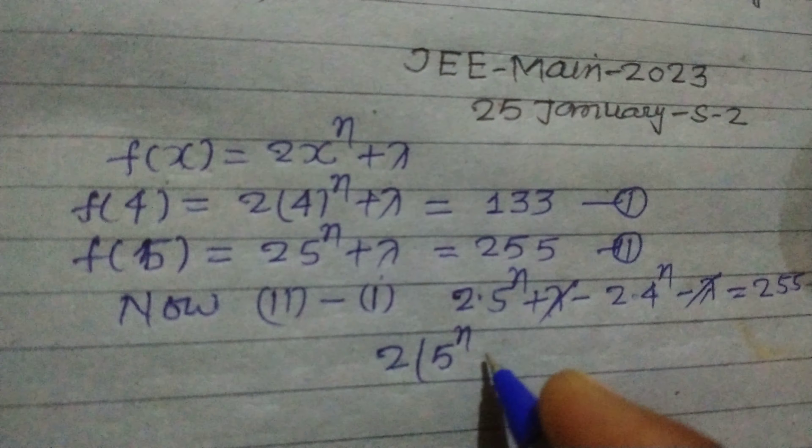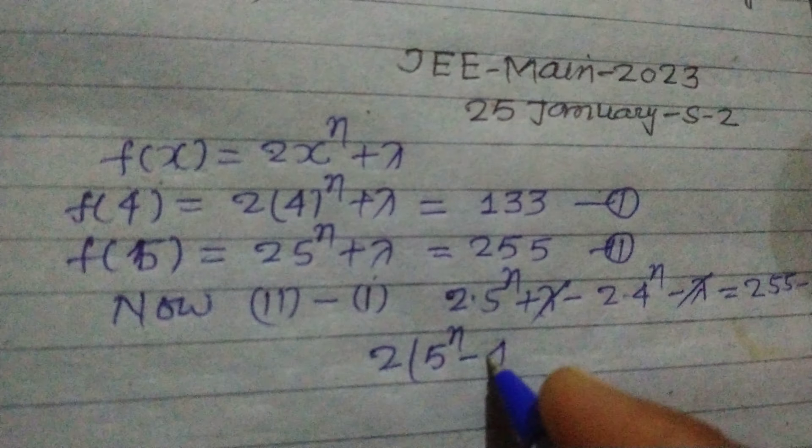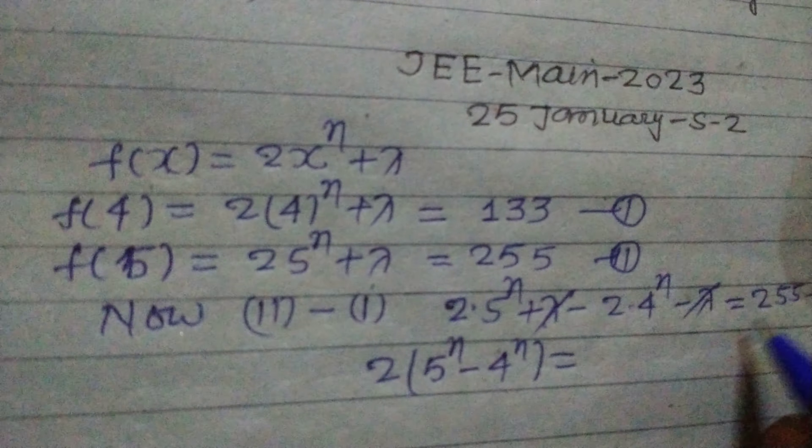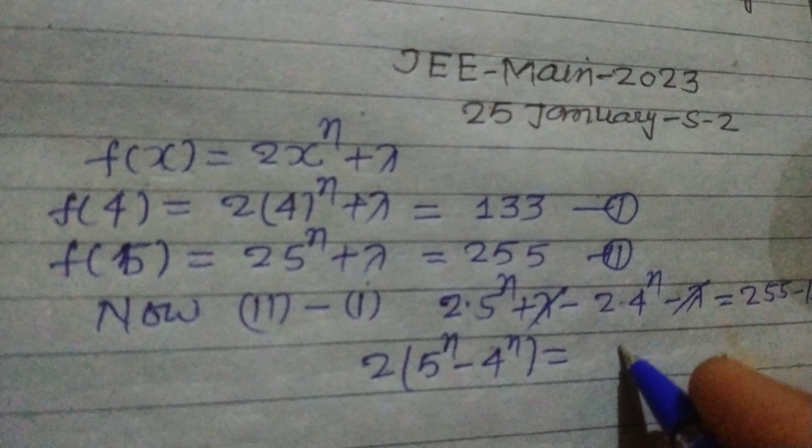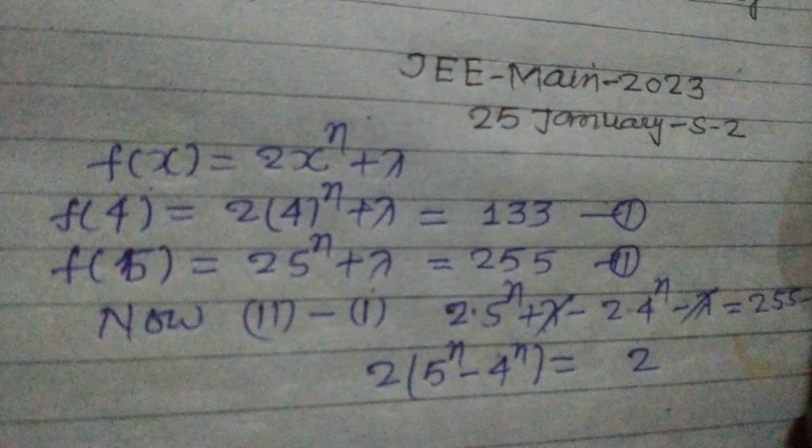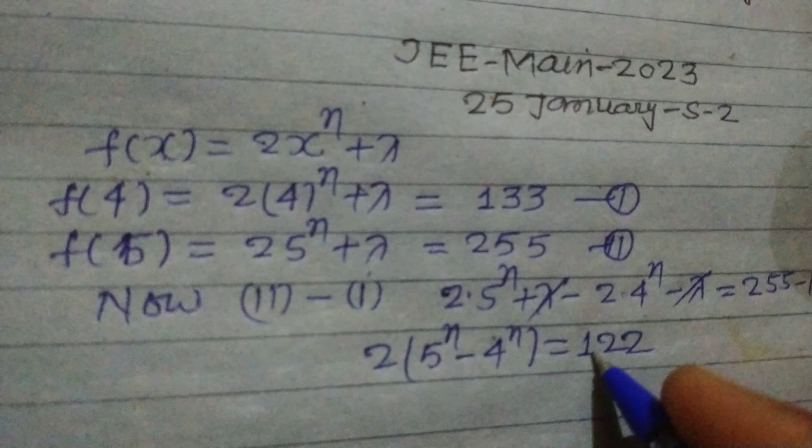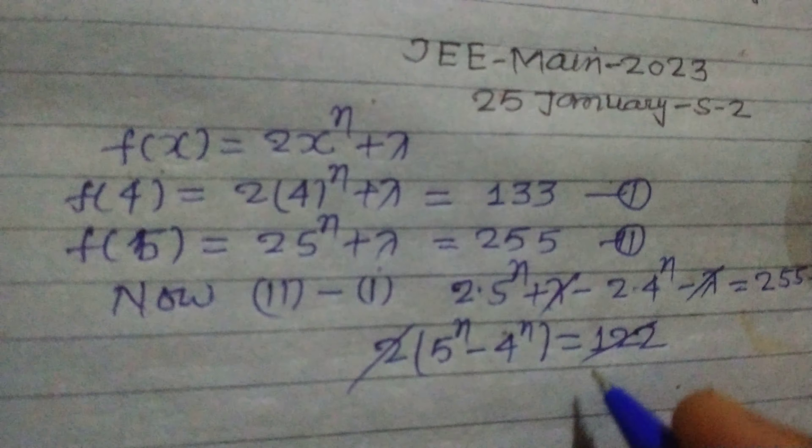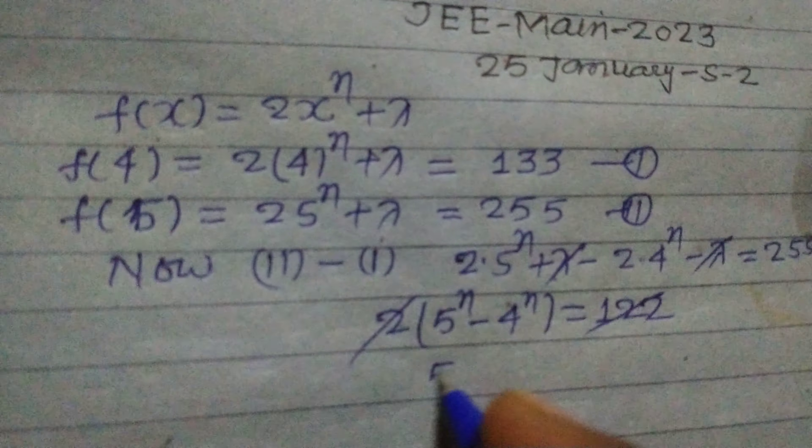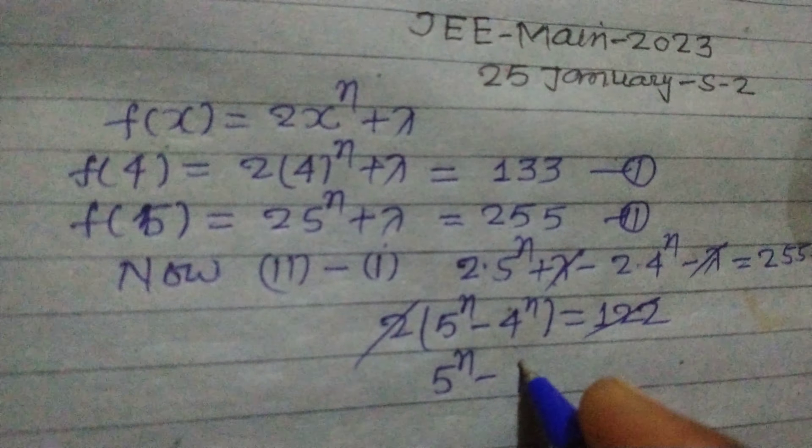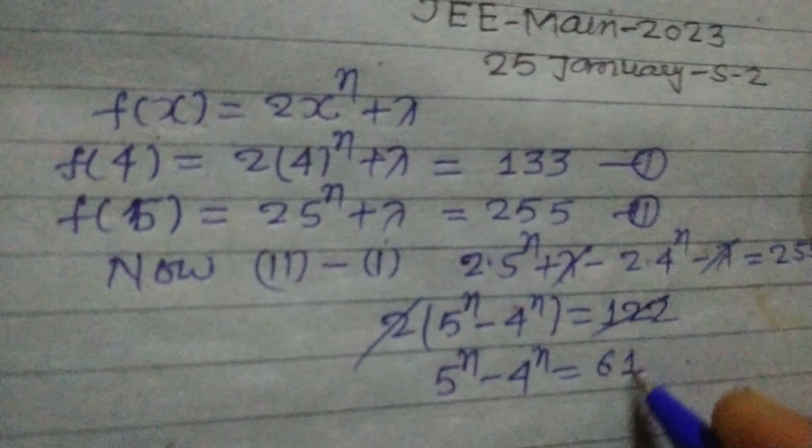5^n - 4^n = this is 5 minus 3 is 2, and 5 minus 3 is 2, and this is 2 minus 1 is 122. Now divide this by 2, we get 5^n - 4^n = 61.